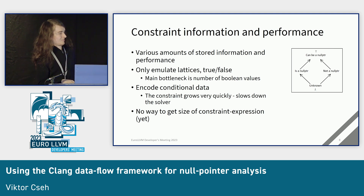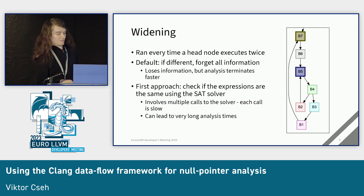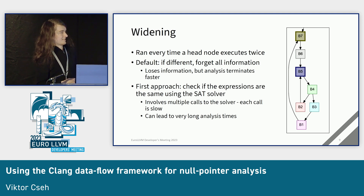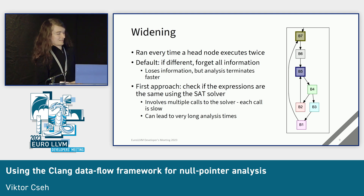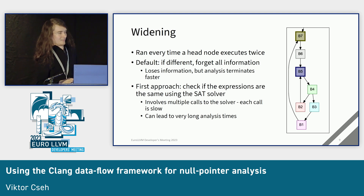We cannot really do anything about it because there's no way to get the size of any given boolean expression yet. But the framework has a solution to this: when we execute a control flow graph node twice — for example, with loops — in the second round and subsequent rounds we get asked to widen the value, which makes the data flow analysis converge faster. By default, we forget all information if the values are different; if they are the same, we keep them.